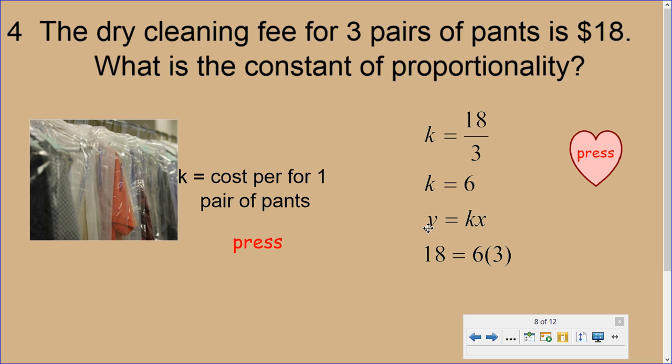So remember, y is equal to kx is the equation, where k is the constant multiplied by x. k would be the $6 multiplied by x number of pairs of pants. If we have three pairs of pants in there, multiplied by $6 per pair of pants, that'll give us $18 that we have to pay. So anytime you have an amount of pair of pants, it'll be priced $6 times that amount of pair of pants. That's why the formula kx equals y. So our answer for k is $6.